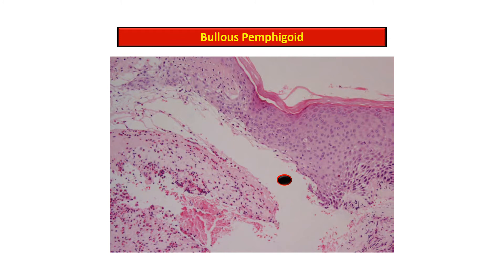There is presence of inflammatory infiltrate and edema in the superficial dermis, and fibrin — the pink material marked by the arrow — can also be present. The inflammatory infiltrate in bullous pemphigoid consists of lymphocytes, eosinophils, and neutrophils. These lesions heal without scarring if not infected.